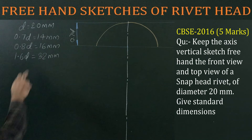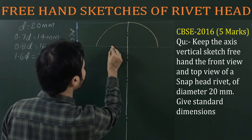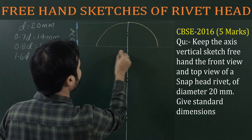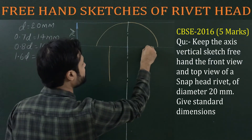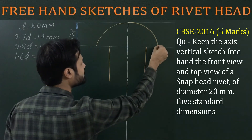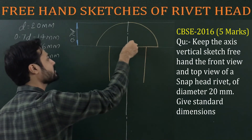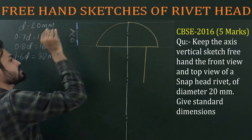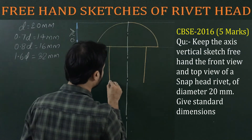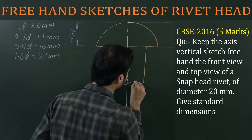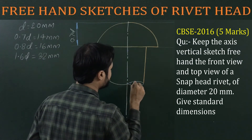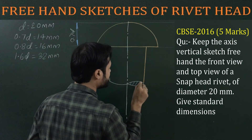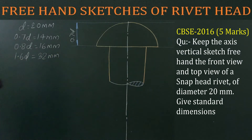Then draw the body. The diameter is 20 mm, so half is 10 mm on each side of the axis. Draw the body for any suitable length and show the tail end as well. Finally, draw hatching lines for proper representation. This completes the front view of the rivet head.